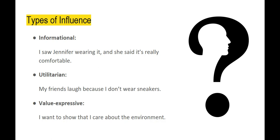Sometimes we need a product to fit in with the peer group for a completely legitimate reason. Let's say your friends have all decided to take up yoga and you've decided you want to try it out with them — that means you're going to need a yoga mat. That's a utilitarian kind of social influence where everyone decides they need a particular product in order to engage in activities together as a group.